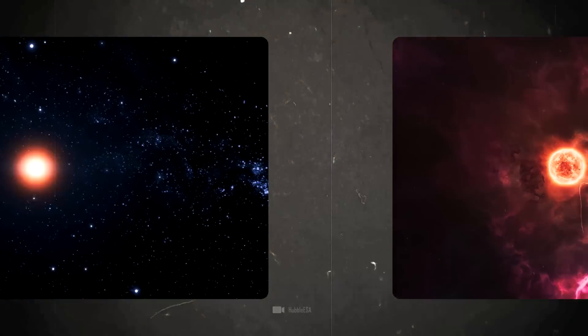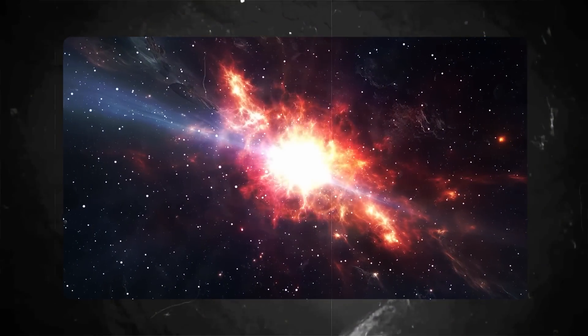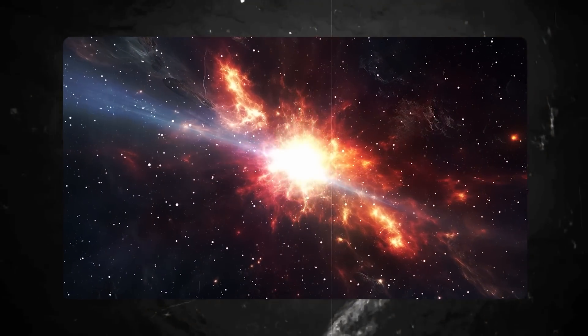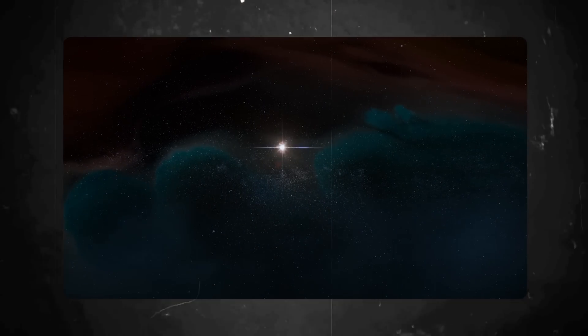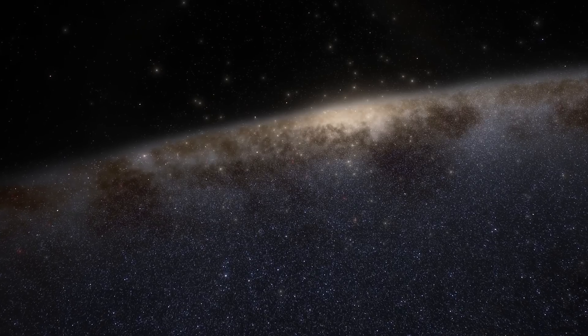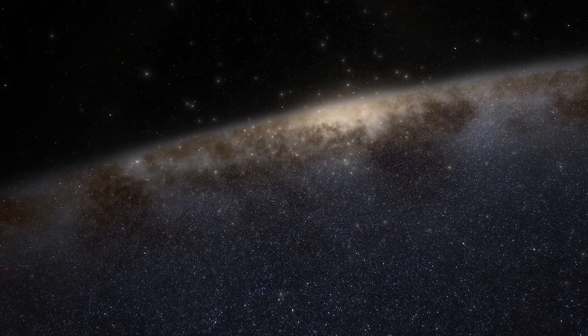The crazy thing is that Betelgeuse could already have exploded. Since the light from the supernova will travel through space for 600 years before it reaches us, we will only see the extreme brightness 600 years after the actual explosion. This idea shows the extreme dimensions of the universe in an impressive way.